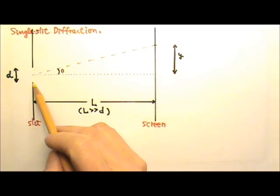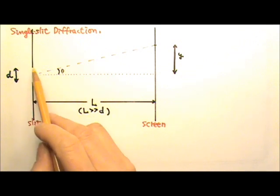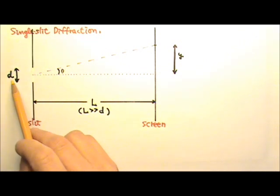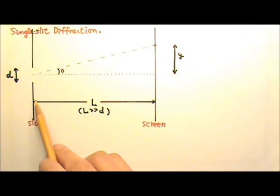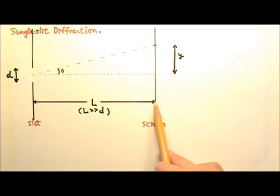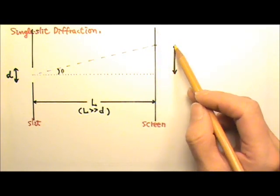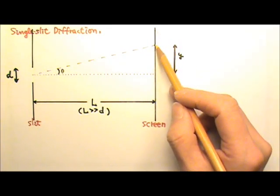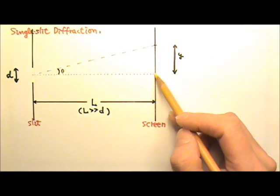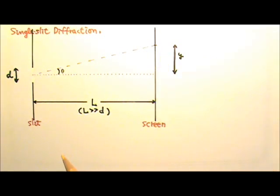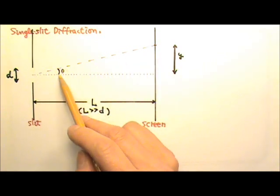Here we have a single slit, and this time we're using D not as the distance between two slits but the width of one single slit itself. L is the distance to the screen, and Y is still the distance on the screen between the location we're interested in and the center of the screen. This angle here is theta.